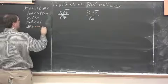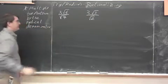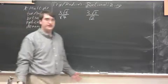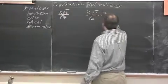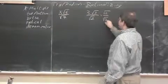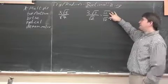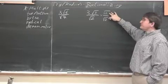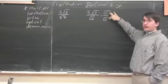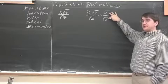But how rationalizing works is we multiply top and bottom by the radical denominator. What this means is that if there is a radical in the denominator, then we want there to not be a radical in the denominator. The point here, I'm going to multiply top and bottom by radical 2. Now, I can do that, because what is square root of 2 over square root of 2? Hopefully, you said it's 1.